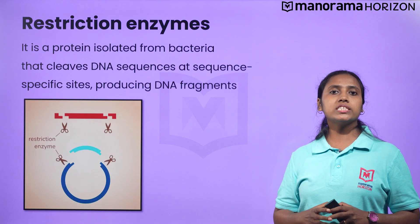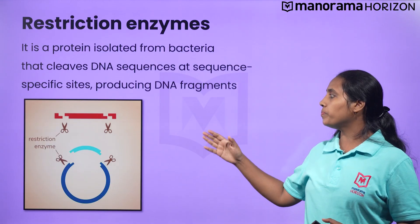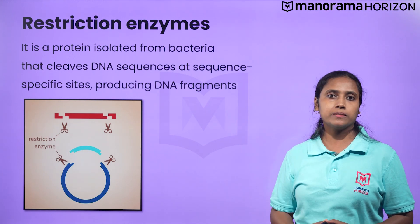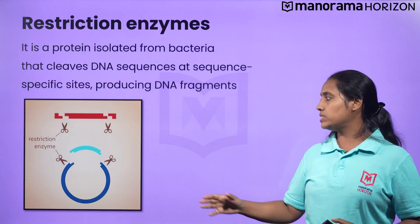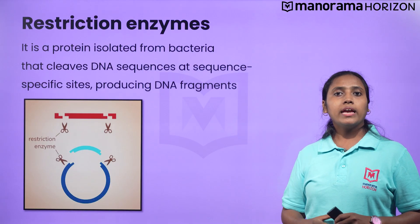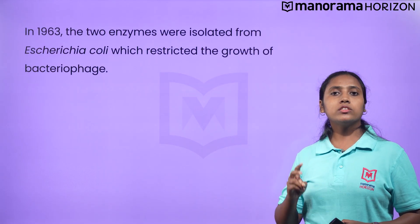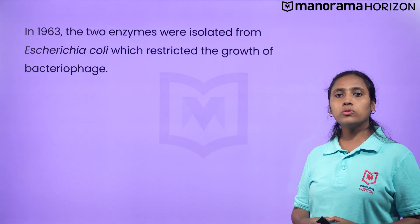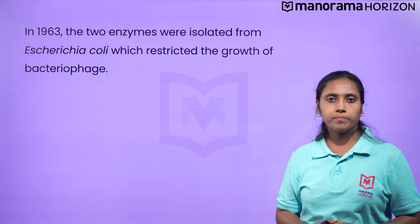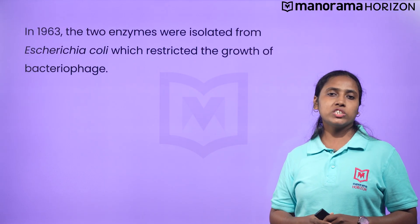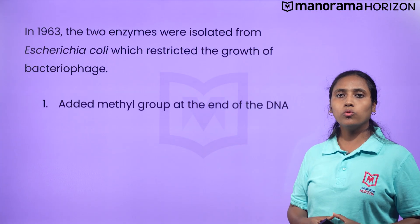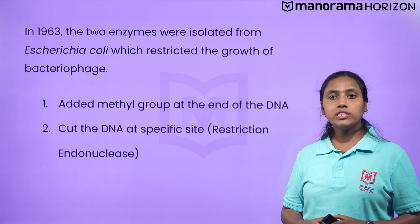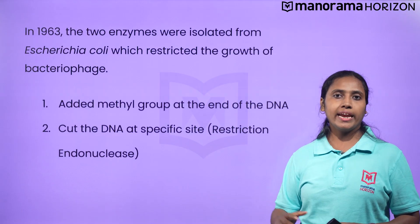A restriction enzyme is a protein isolated from bacteria that cleaves DNA sequences at sequence-specific sites and produces DNA fragments. In the year 1963, the two enzymes which restricted the growth of bacteriophage were isolated from E. coli. One of these restriction enzymes added a methyl group to DNA and the other cut the DNA. The latter one was known as restriction endonuclease.